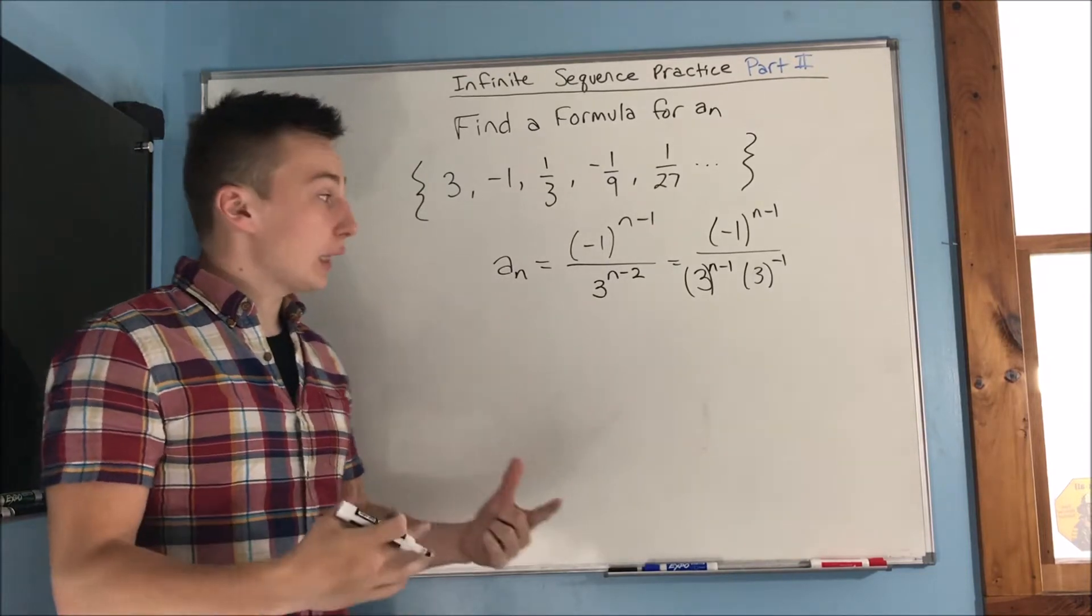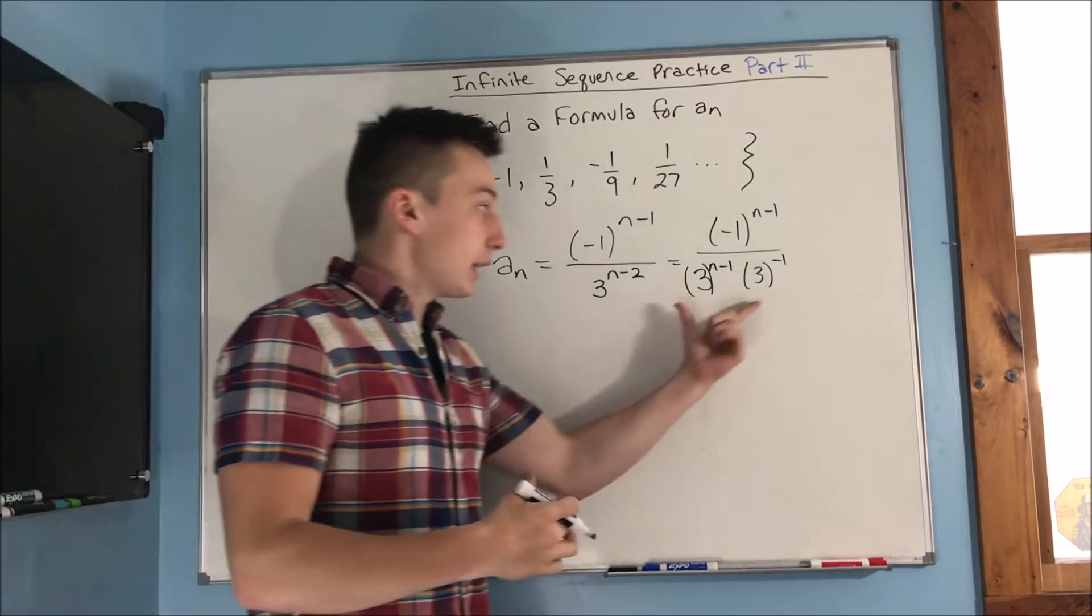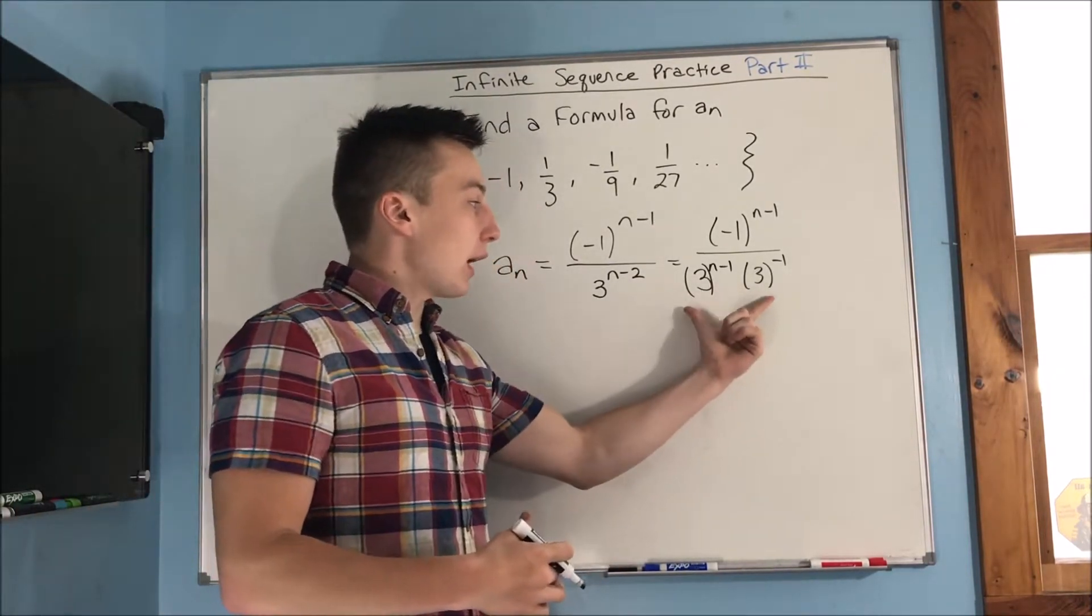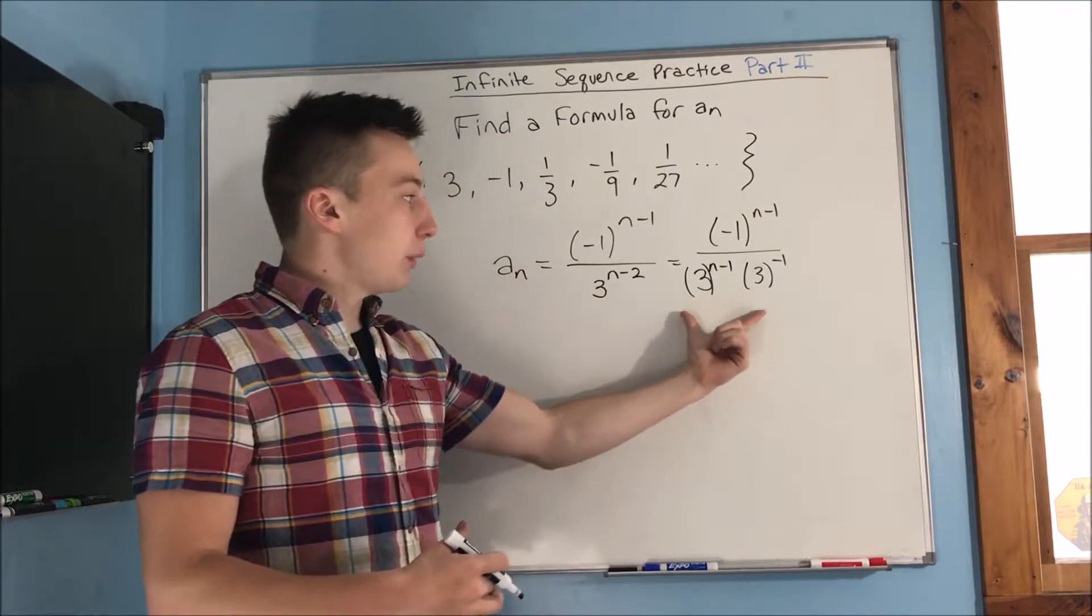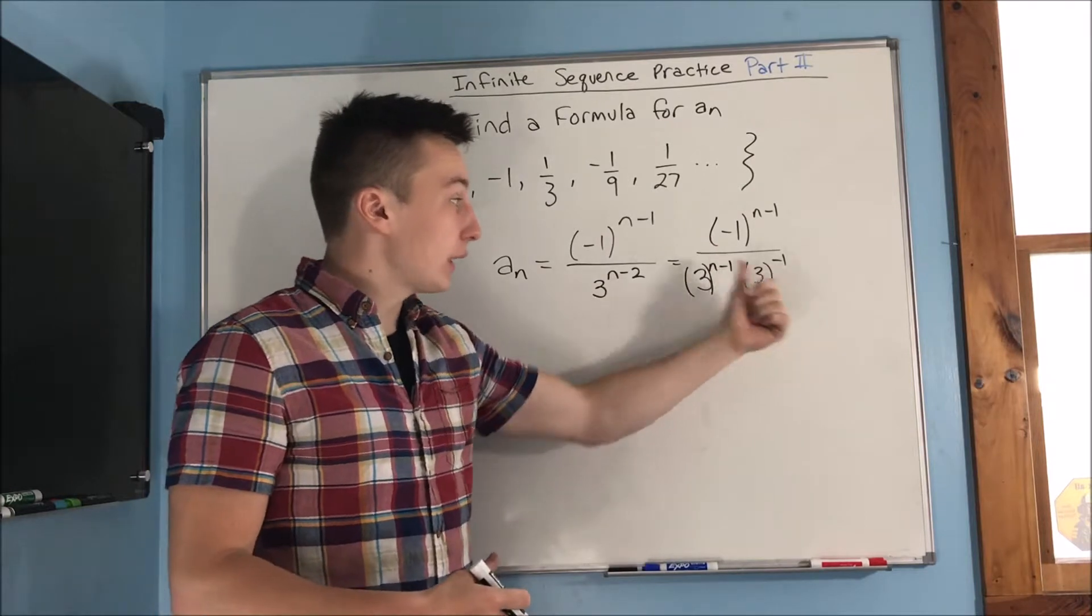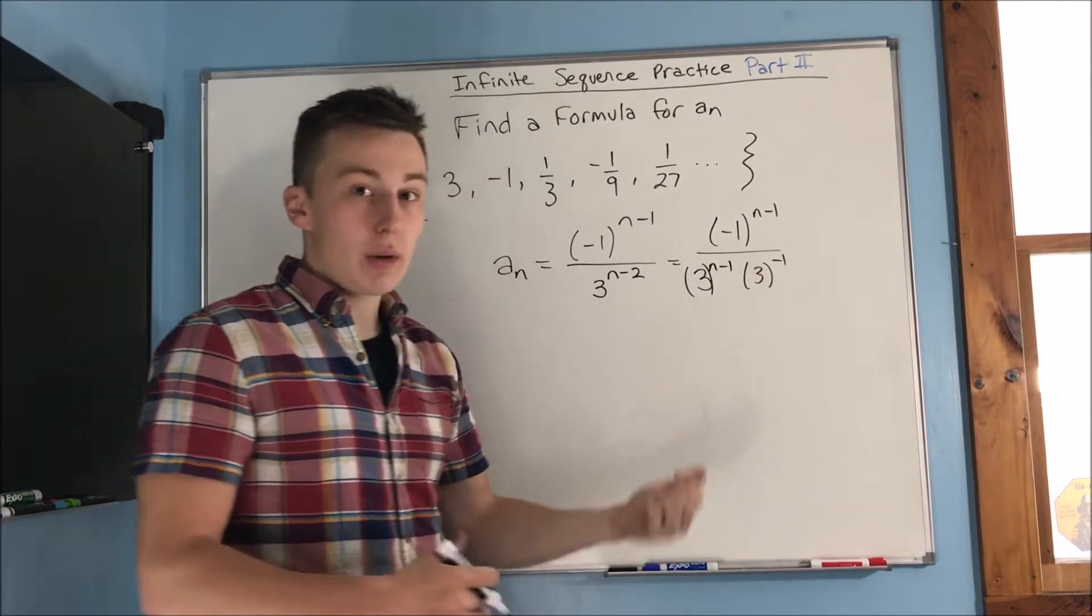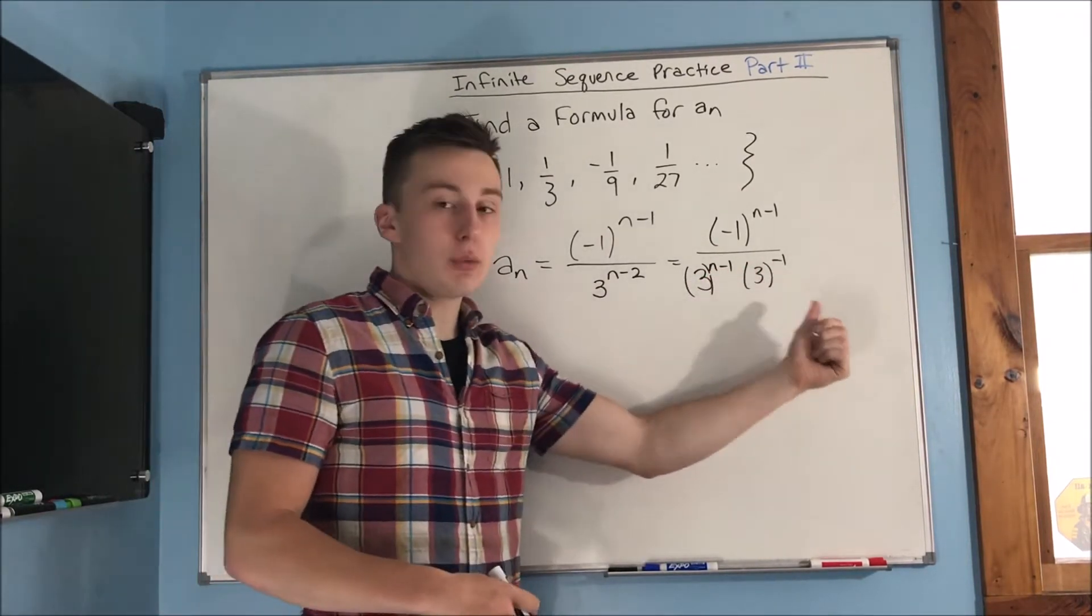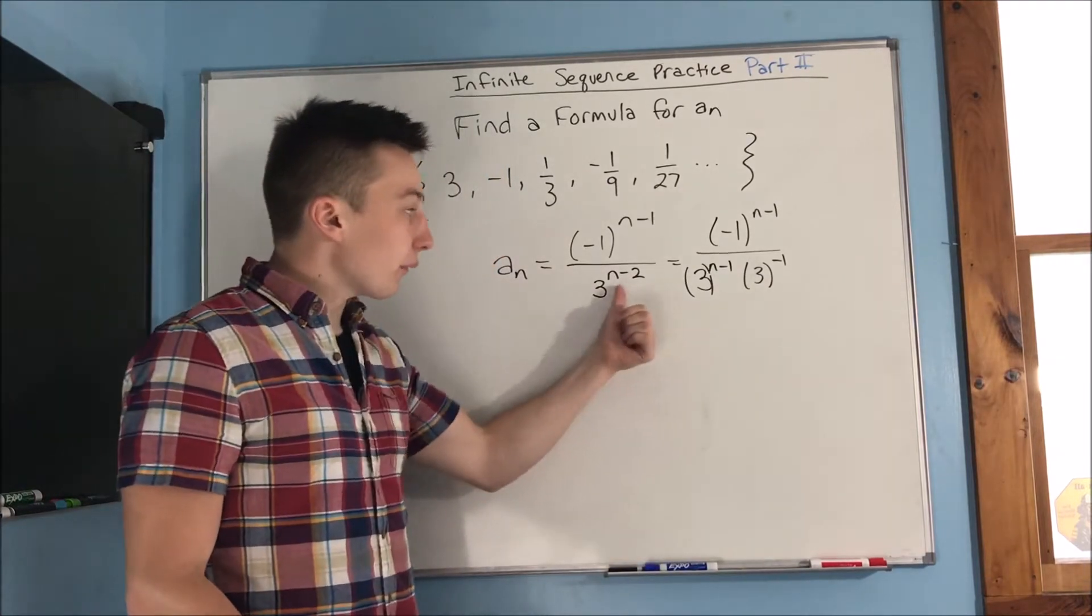Using what we know about exponent properties, this is true because when we multiply these two pieces right here, we have to add the exponents. When we add the exponents we get n minus two, right? We have an n minus one minus one which is n minus two, which is that.